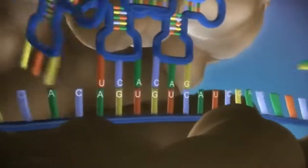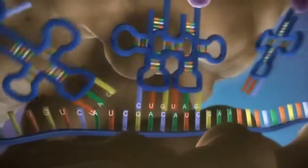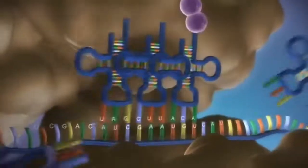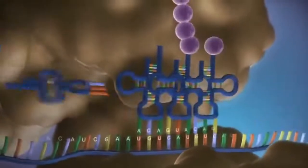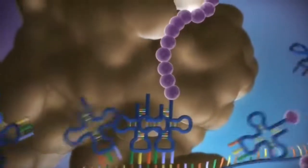The messenger RNA is read three bases at a time. As each triplet is read, a transfer RNA delivers the corresponding amino acid. This is added to a growing chain of amino acids.